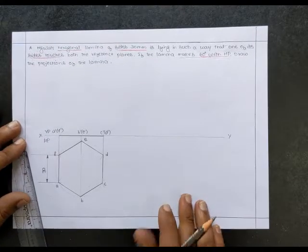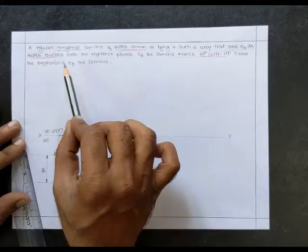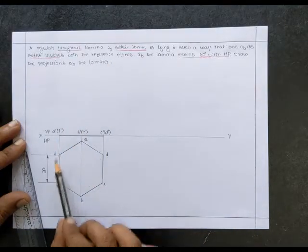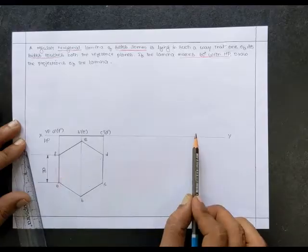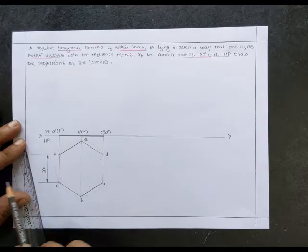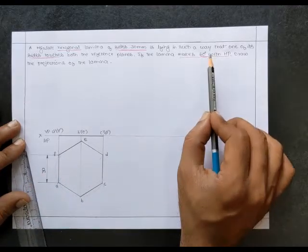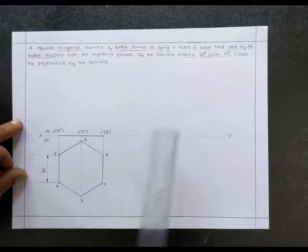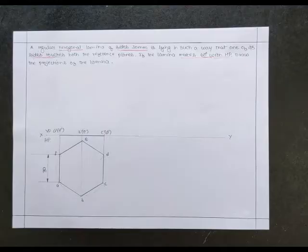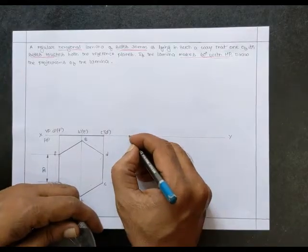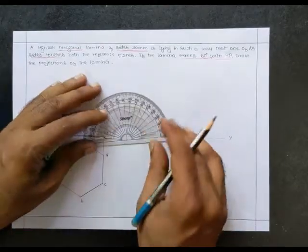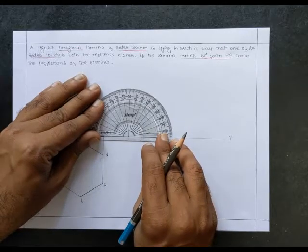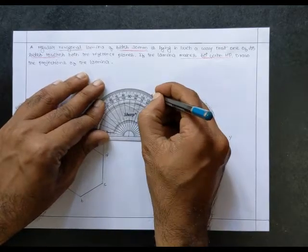Next, the problem states one of its sides touches both the reference planes — edge AF touches the XY line, which will be considered in the later stage. First, take the lamina inclination with respect to HP, given as 60 degrees. Choose a point and make an inclination of 60 degrees with respect to the XY line, and draw a thin line at that angle.